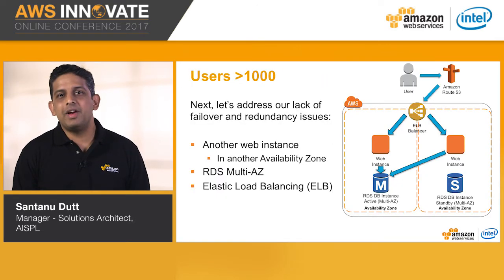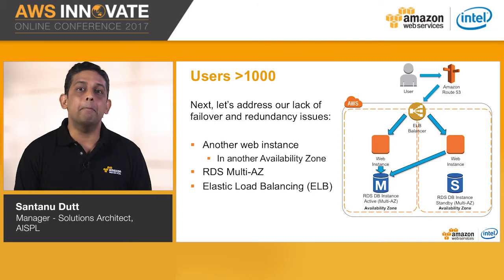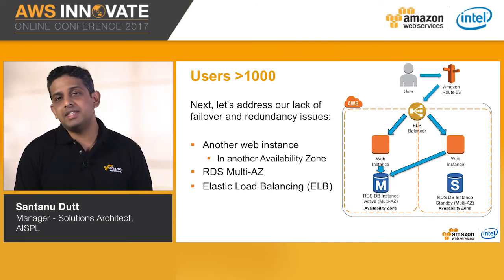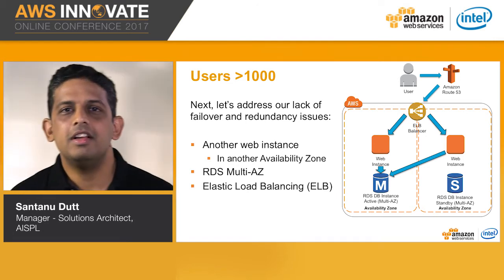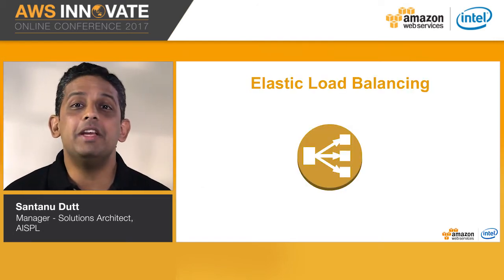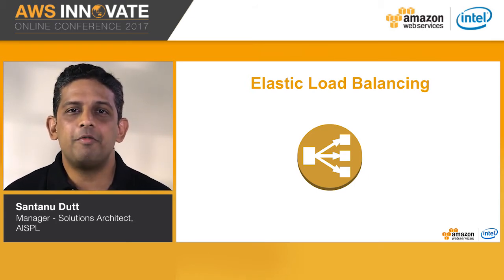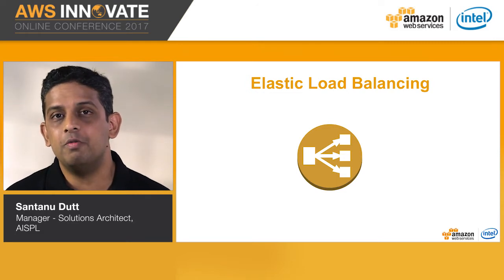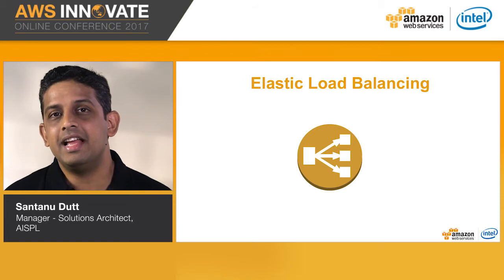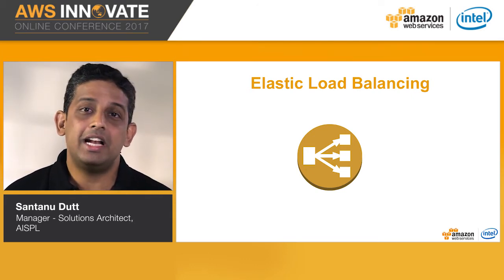Next, we need to address the lack of failover and redundancy. We're going to do this by adding another web app instance and enabling the multi-AZ feature of RDS, which gives us a standby instance in a different availability zone from the primary. We're also going to replace our elastic IP with an elastic load balancer to share the load between the two web app instances. Elastic Load Balancer, or ELB, is a highly scalable load balancing service. It creates a self-healing and self-scaling load balancer that can balance across AZs in a region, doing SSL termination, handling sticky sessions, and supporting multiple listeners.